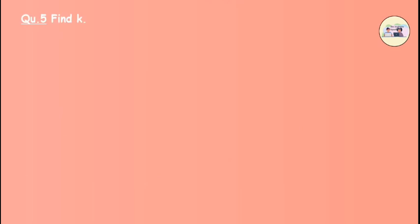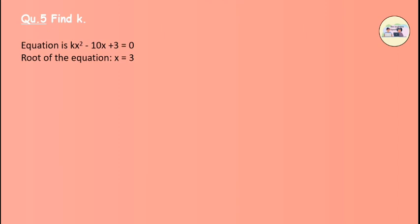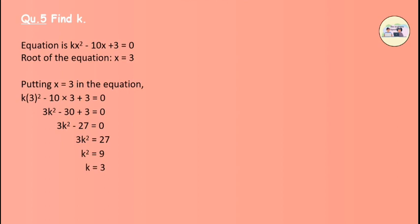Question 5: Find k if x equals 3 is a root of the quadratic equation kx squared minus 10x plus 3 equals 0. Put x equals 3 in the entire equation. We get the answer of k as 3. Therefore, when x equals 3, the value of k is equal to 3.